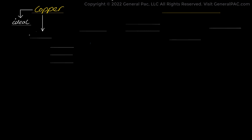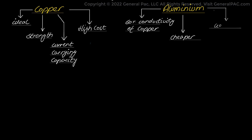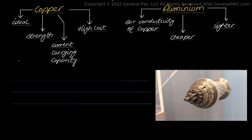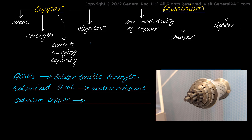Copper is no doubt the ideal conductor for transmission of electrical power owing to its great mechanical strength and more current carrying capacity than any other material. However, its cost is high and reserves are few. Aluminum has 60% the conductivity of copper and is relatively cheaper and lighter, giving it an edge over copper and therefore it is more commonly used. Aluminum alloys reinforced with steel, or ACSR, are also used to bolster tensile strength and give better conducting properties. Galvanized steels have very high tensile strength and are used in areas where weather conditions are very abrupt, and cadmium copper is used for extremely long distances.